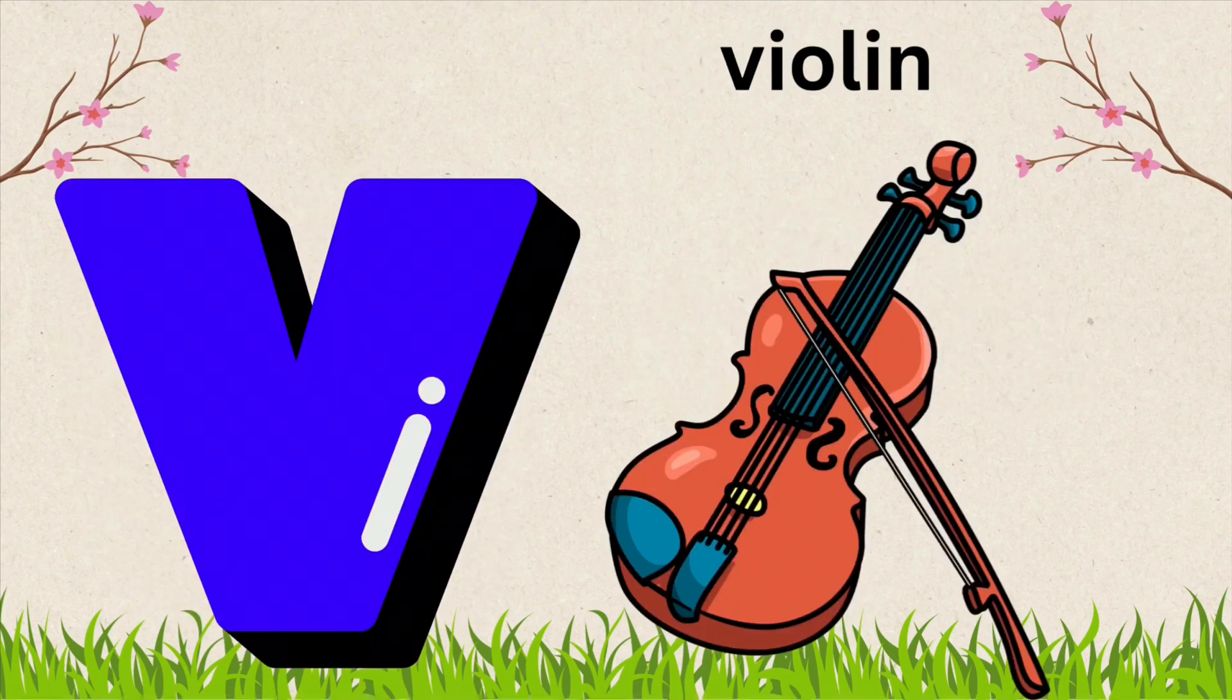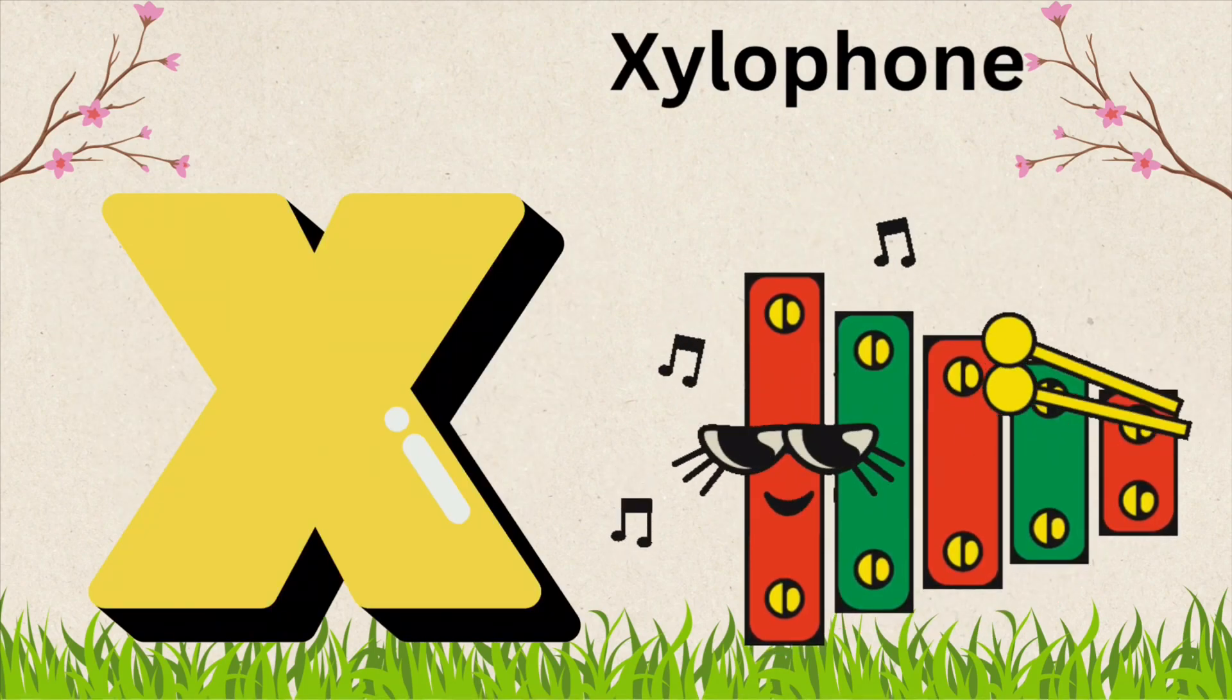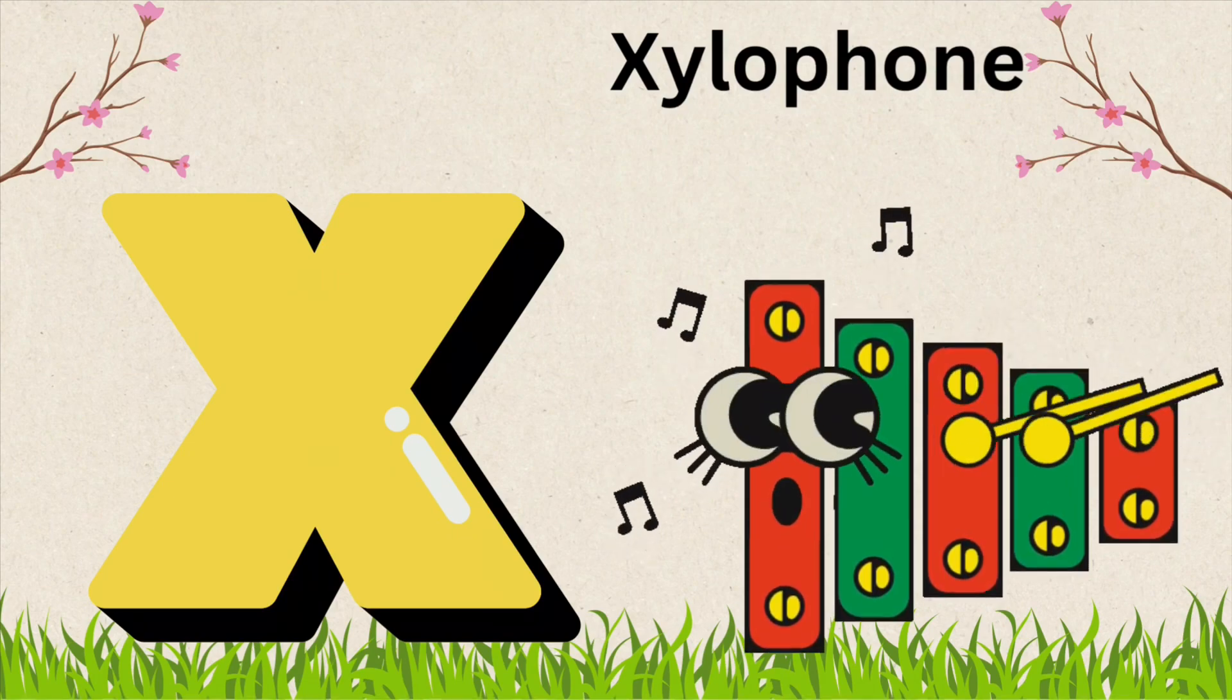V is for Violin. V, I, O, L, I, N, Violin. W is for Watch. W, A, T, C, H, Watch. X is for Xylophone. X, Y, L, O, P, H, O, N, E, Xylophone.